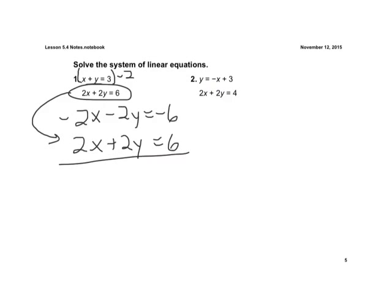Now look what we get. We get our x's to cancel out. Negative 2x and a positive 2x is 0. Negative 2y and a positive 2y is 0. Negative 6 and 6 is 0. Well, 0 equals 0. That's true.